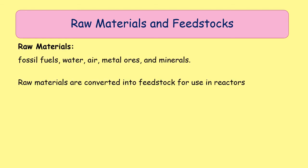Previously mentioned were feedstocks and raw materials — two terms you need to know the difference between, because they are related but have a key difference. A raw material is anything that you do not need to process and can put directly into a chemical reactor. Things like fossil fuels, crude oil, gas, water, air, minerals, metal ores, and rocks are all raw materials.